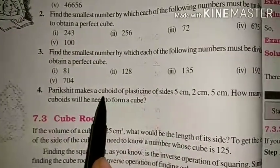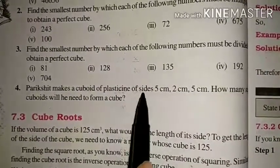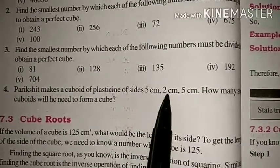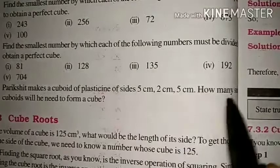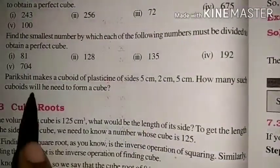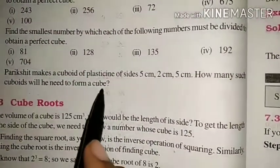Parikshit makes a cuboid of plasticine of side 5 cm, 2 cm, 5 cm. How many such cuboids will he need to form a cube?